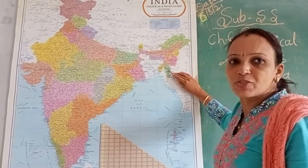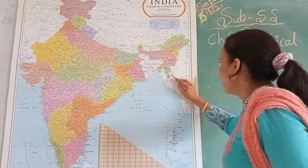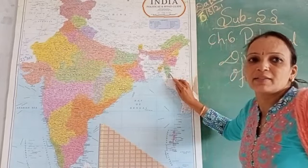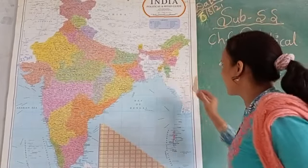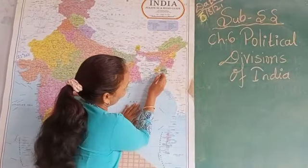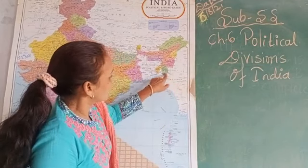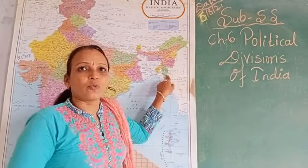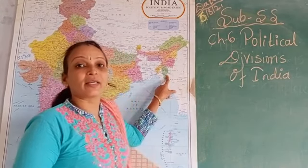The next state is Mizoram. Its capital is Aizawl. This state also shares its border with Myanmar. The languages spoken here are Mizo and English.